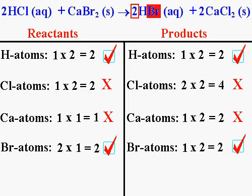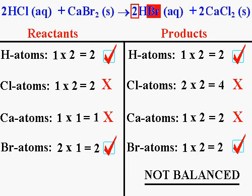But that doesn't help, because the chlorine atoms aren't balanced and the Ca atoms aren't balanced. In the end, this is not a balanced equation.